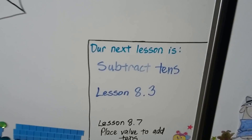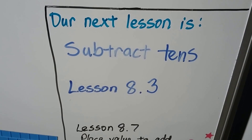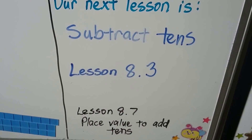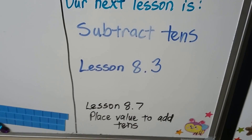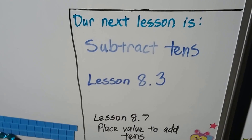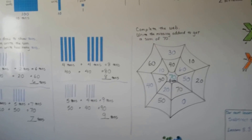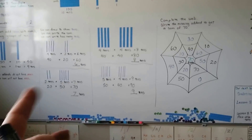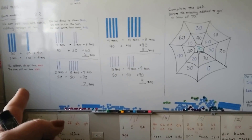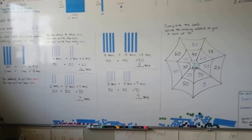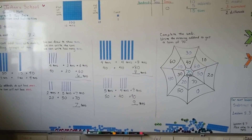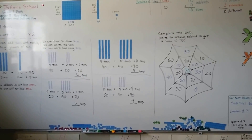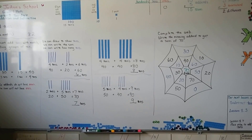Our next lesson is subtract tens. We just added tens, now we're going to subtract tens — that's lesson 8.3. We're going to be using place value to add tens in lesson 8.7 in a few videos. Right now we're just using models and counters to get us started, so you can practice adding tens. You can pretend that each finger is a ten and say ten, twenty, thirty and count by tens and add tens. You can make your own models of ten and practice. I'll see you next time. Bye!